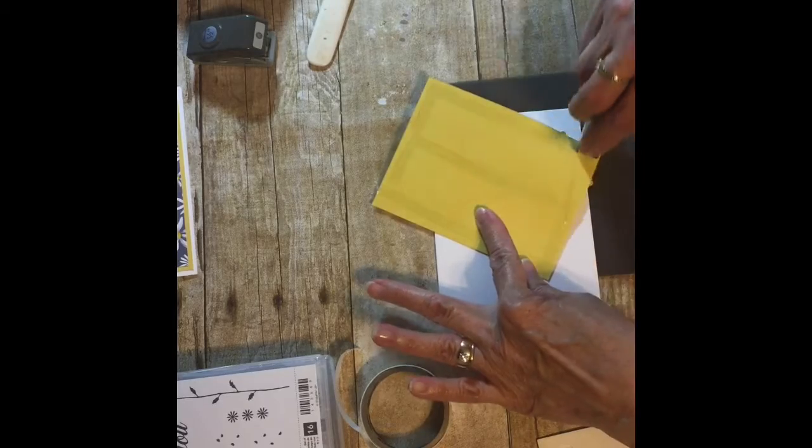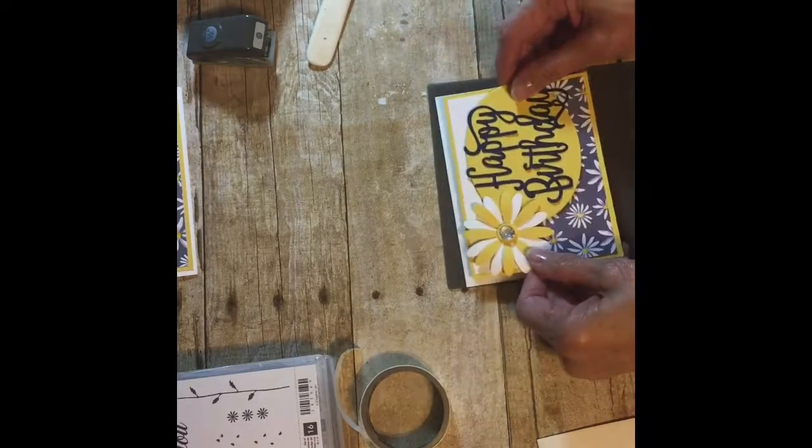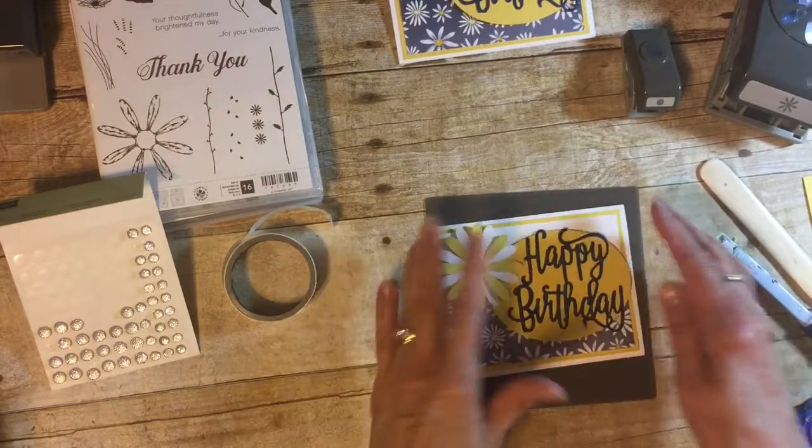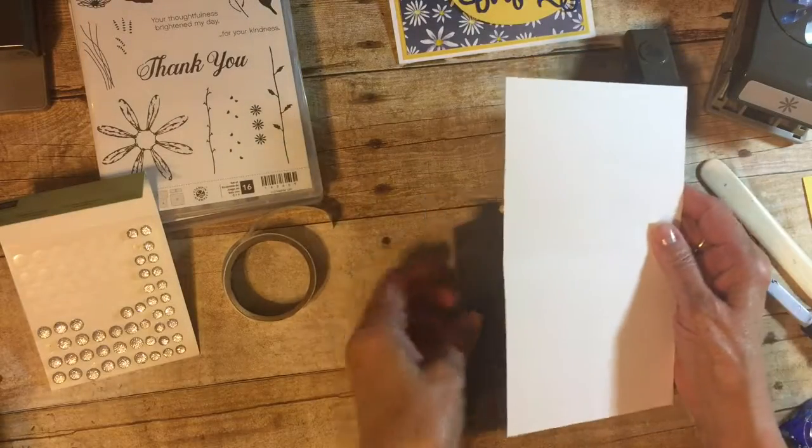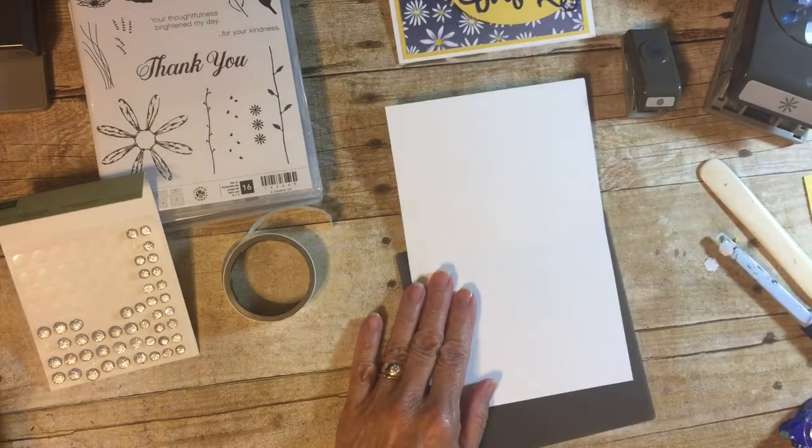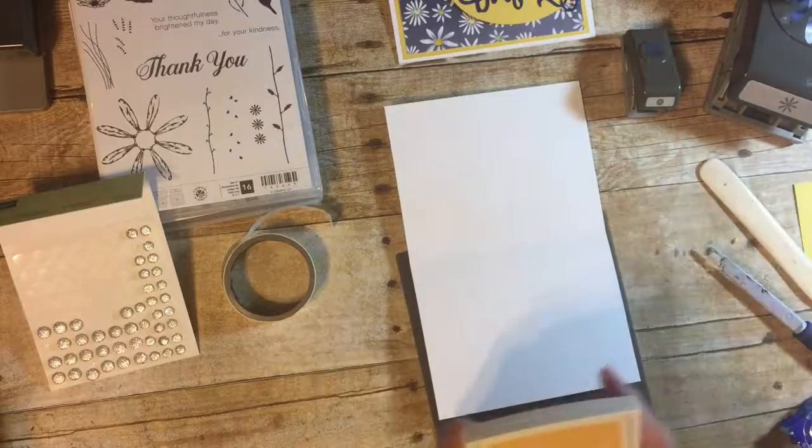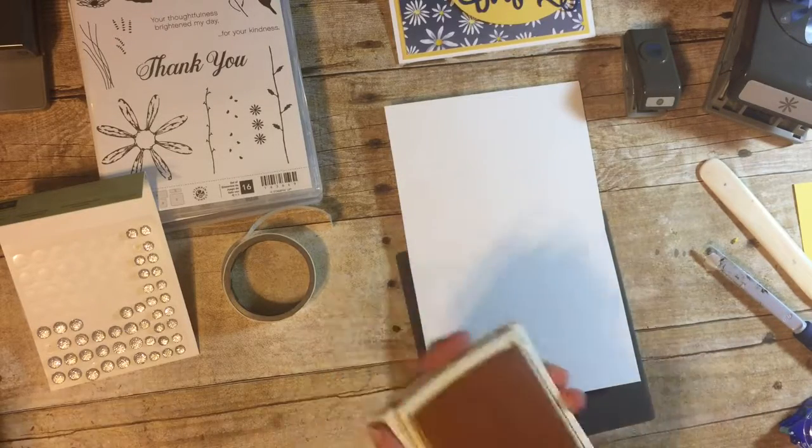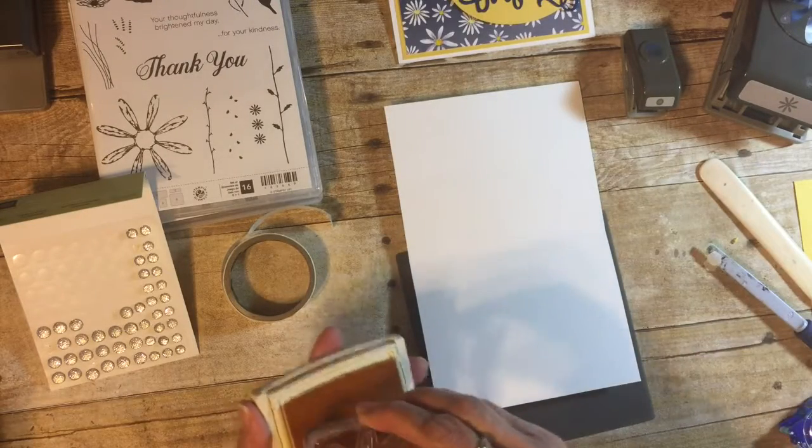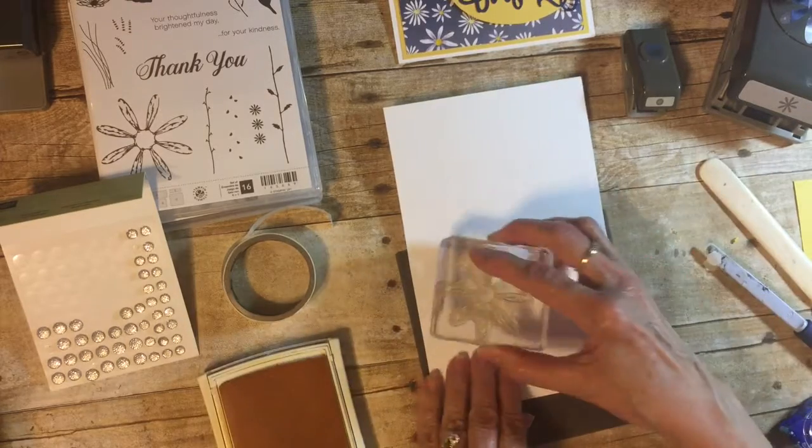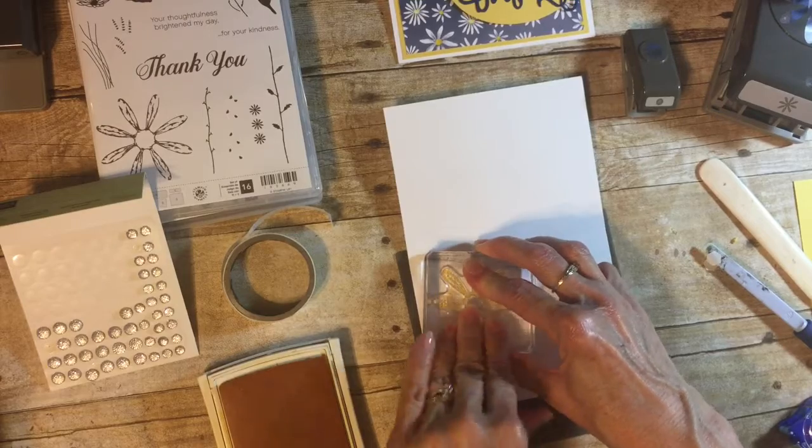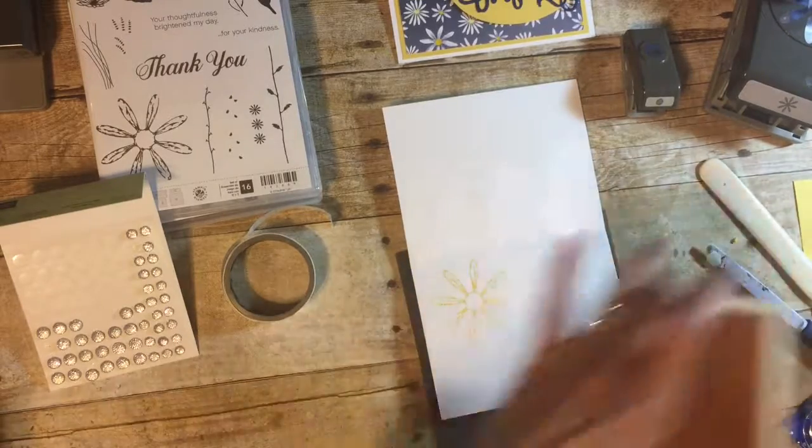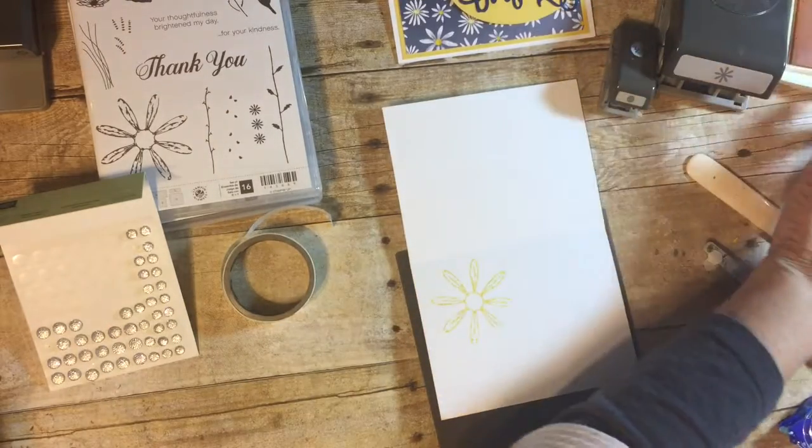Then I'm just going to take this and put it on the card base. There you go, and there's your card. Then on the inside I just stamped a flower, the daisy, stamped it out right there, and then I said the Daffodil Delight.